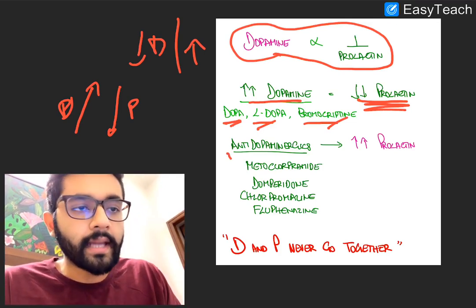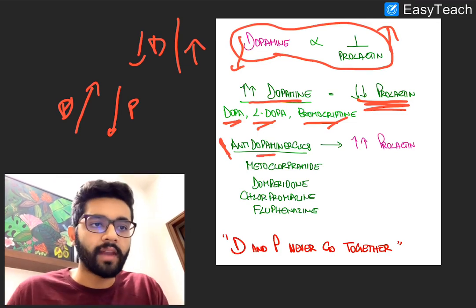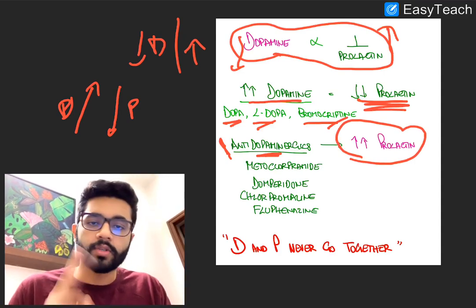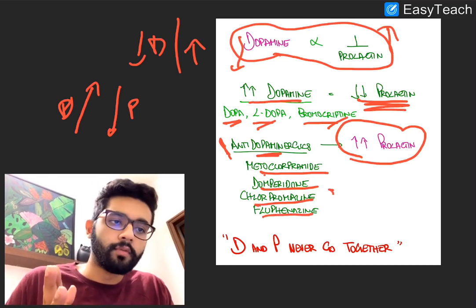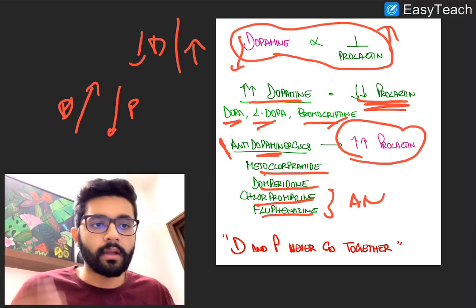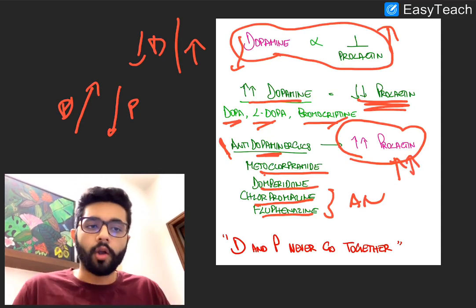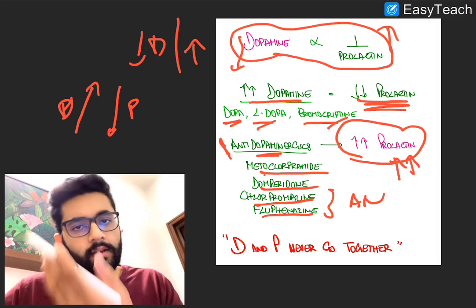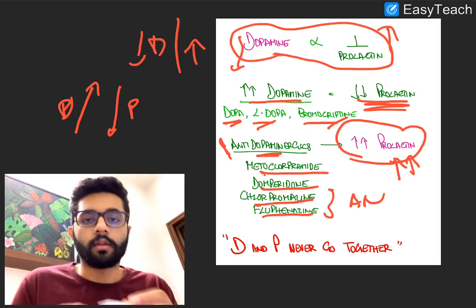Anytime you have an anti-dopaminergic drug, dopamine comes down and you will have hyperprolactinemia or increased prolactin secretion. The important anti-dopaminergic drugs acting mainly on the D2 receptor include metoclopramide (an antiemetic), domperidone (an antiemetic), and chlorpromazine and fluphenazine (both antipsychotics). All these drugs block the D2 receptor, causing anti-dopaminergic activity and increased prolactin. These drugs can cause hyperprolactinemia, leading to adverse effects like amenorrhea and infertility in women and gynecomastia in men.